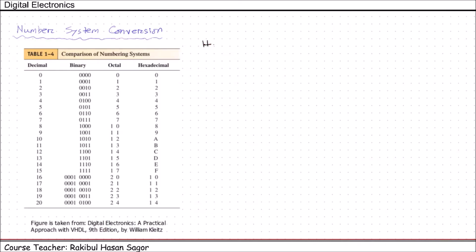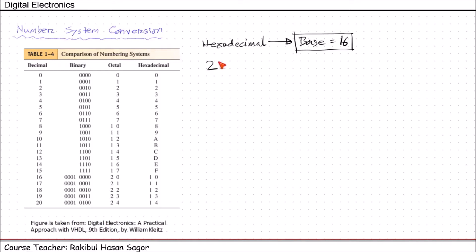Similarly, for the hexadecimal system, the base is 16, which is the fourth power of the binary number system base (2⁴ = 16). A binary number can be converted into an equivalent hexadecimal number by splitting the integer and fractional parts into groups of 4 bits, starting from the binary point on both sides. Zeros can be added to complete outside groups if needed.